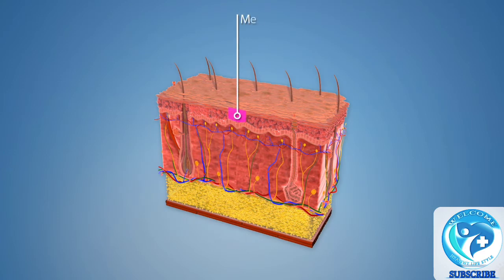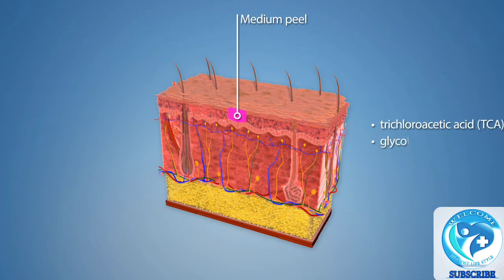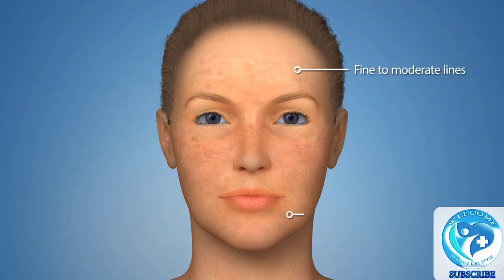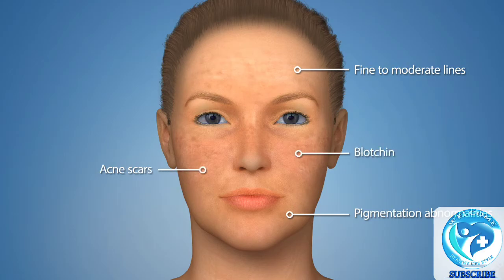Medium chemical peels are one of the most common chemical peel treatments. Medium peels typically use trichloroacetic acid (TCA) or glycolic acid to remove the damaged layers of the epidermis. Medium peels are a safe, effective method of treating fine to moderate lines, pigmentation abnormalities, acne scars, and blotchiness of the skin.